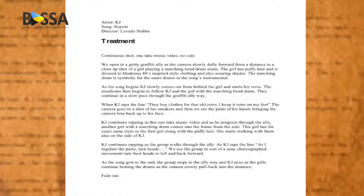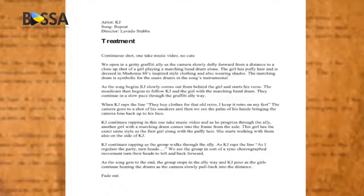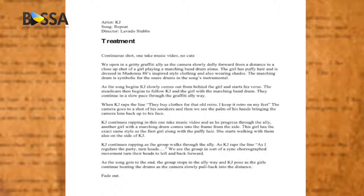The treatment almost always has the artist's name, the song, and the director's name on it. This was really early on in my career — just a basic structure, one page. Because I was funding the video, I didn't really have to convince the artist; he just had to trust me. But I still had to bring across to the crew what I wanted to do. So the first line I wrote was: 'A continuous short, one take music video, no cuts.' We open up in graffiti alley as the camera slowly dollies forward from a distance to a close-up shot of a girl playing a marching band drum alone. The girl has puffy hair and is dressed in Madonna 80s inspired style clothing, also wearing shades. The marching drum is symbolic for the snare drum in the song's instrumental.